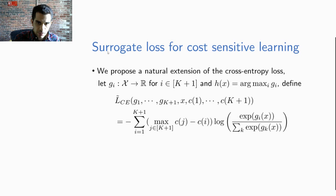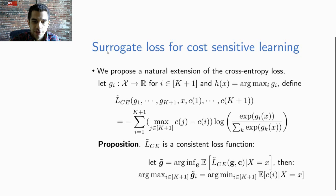We have that this loss tilde L_CE is a consistent loss function. What this means is that if we minimize this loss over all measurable functions g, the minimizer that we obtain will pick the class that has the least expected cost given the covariate X, meaning we pick the class that minimizes the expectation of C of i given X.